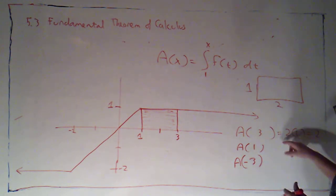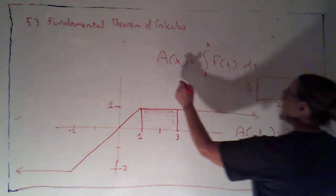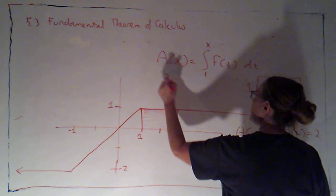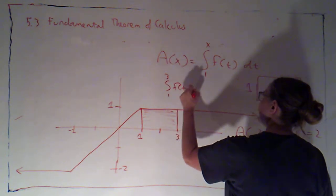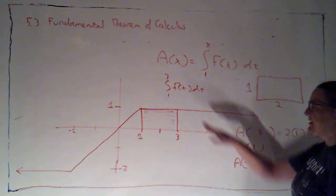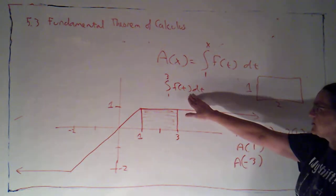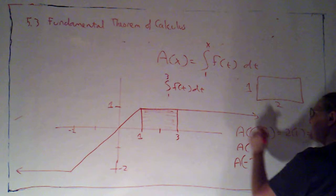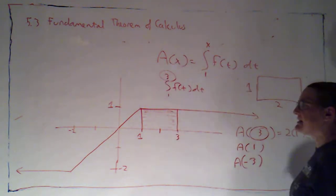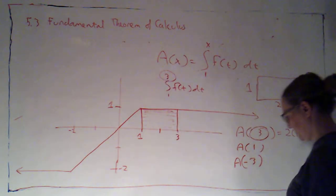And I suppose I could have actually written that out. That's the integral from 1 to 3 of f of t dt, so that we get used to this notation and plugging this number in as the upper limit of integration.